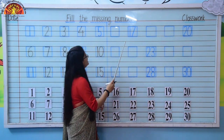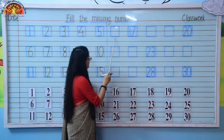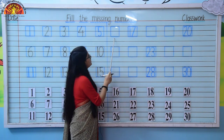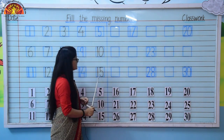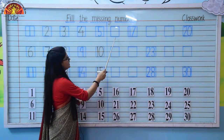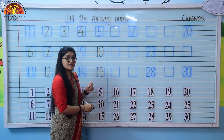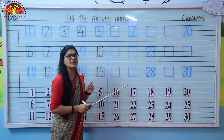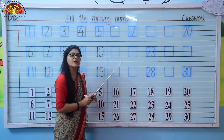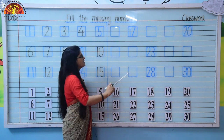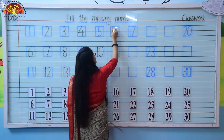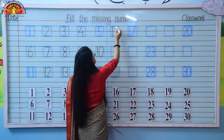Now kids, look here — our number is missing. So which number comes after 15? It's 16. So here we will write number 16: 1, 6, 16.